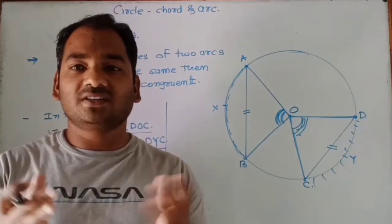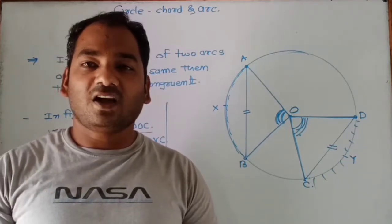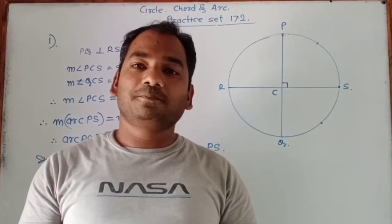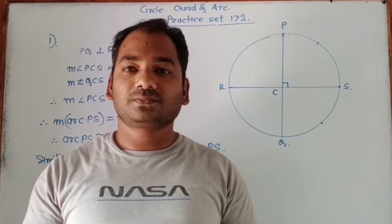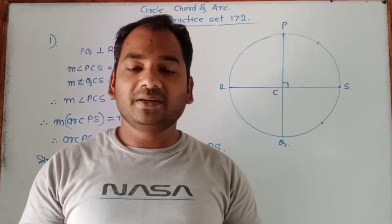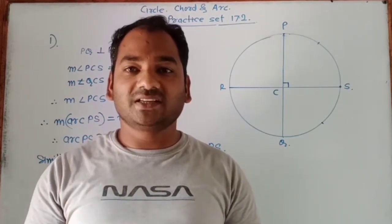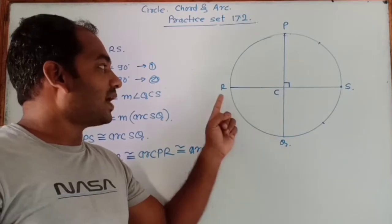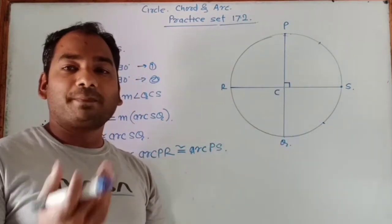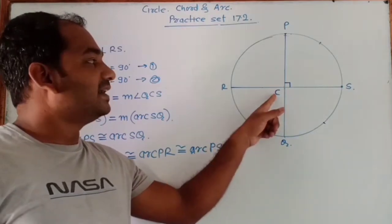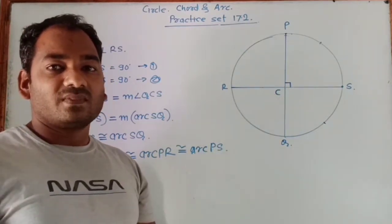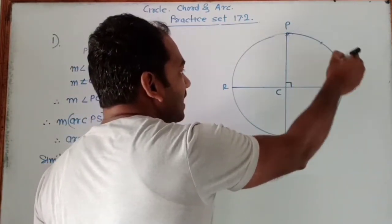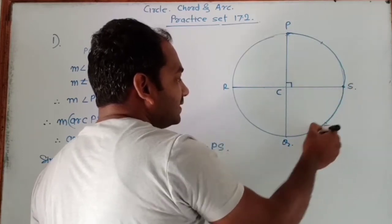These are the few important points to remember. After this, we are going to solve practice set 17.2. Now look at problem set 17.2. In the first question, it is given that diameter PQ and diameter SR are perpendicular to each other at centre C of the circle. Then prove that arc RPS is congruent to arc RSQ.